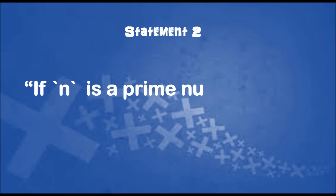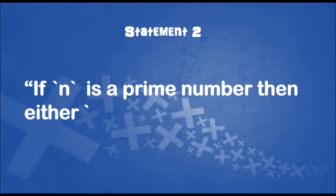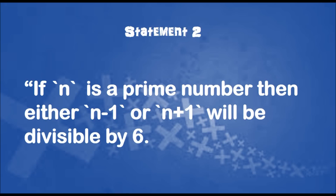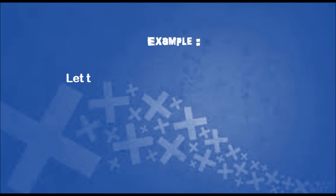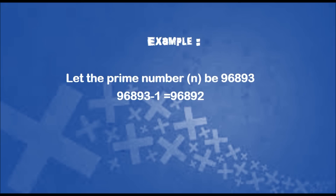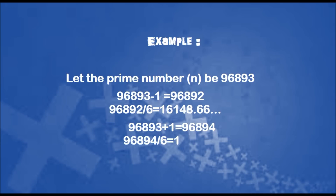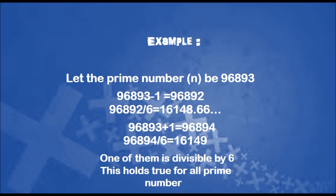Statement 2: If n is a prime number then either n-1 or n+1 will be divisible by 6. Example: Let the prime number n be 96893. Subtracting 1 from n and dividing by 6 gives a decimal number. Next, adding 1 to n and dividing the result by 6 gives a whole number. One of them is divisible by 6. This holds true for all prime numbers.